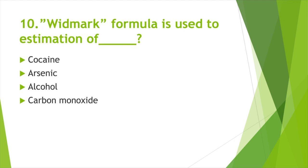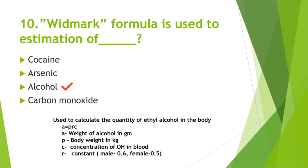The Widmark formula is used for estimation of — Option A: Cocaine, Option B: Arsenic, Option C: Alcohol, Option D: Carbon monoxide. Answer: Option C, Alcohol. The Widmark formula calculates the quantity of alcohol in the body: A = p × r × c, where A is weight of alcohol in grams, p is body weight in kilograms, c is concentration of alcohol in blood, and r is a constant — 0.6 for males and 0.5 for females.